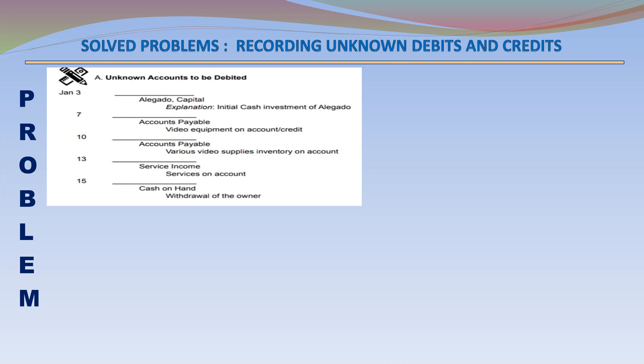January 3 – Ajegado Capital Credit – Initial cash investment of Ajegado. January 7 – Accounts Payable Credit – Video equipment purchased on account.